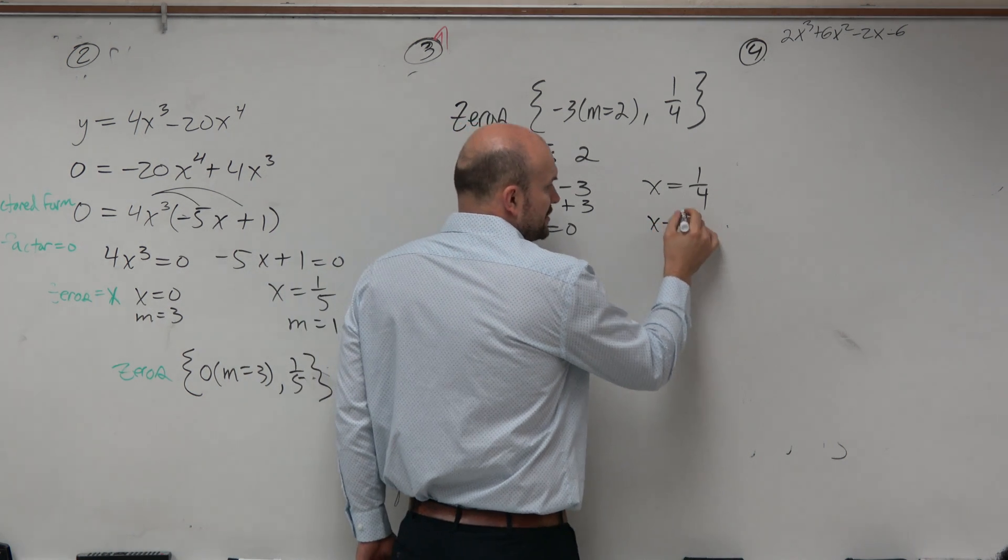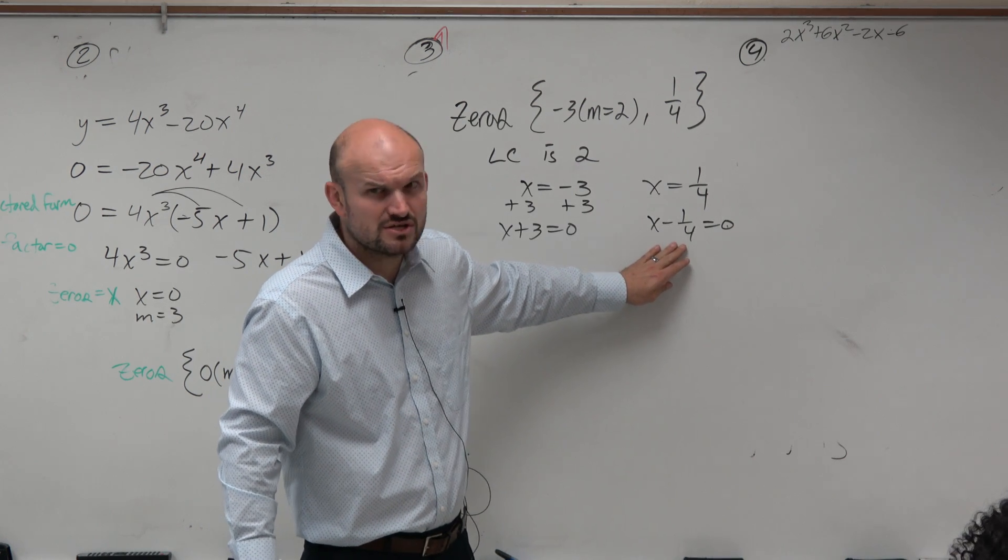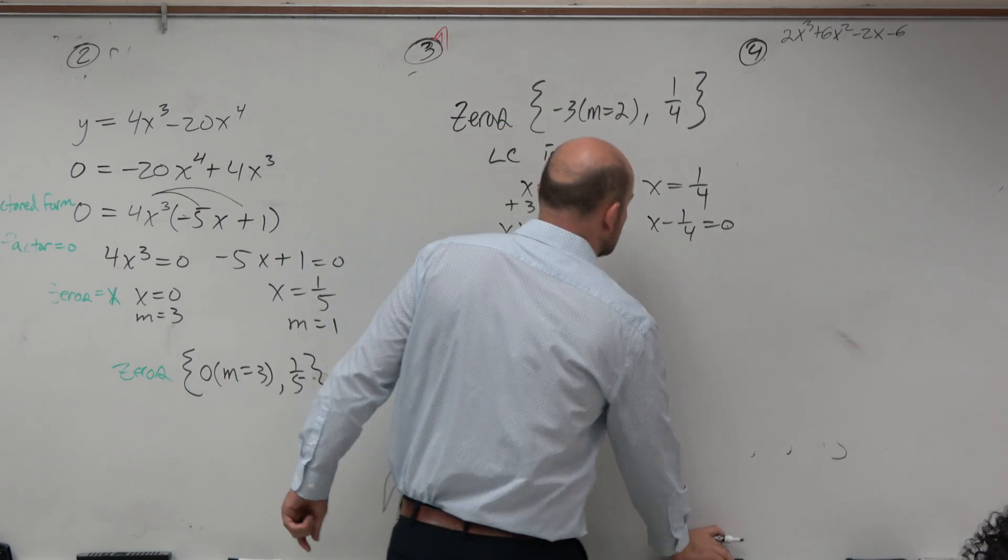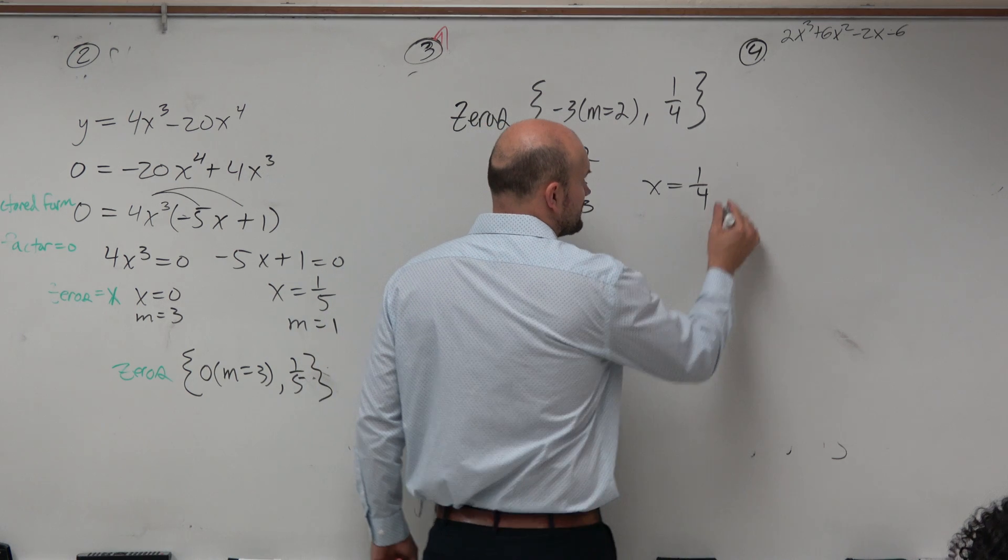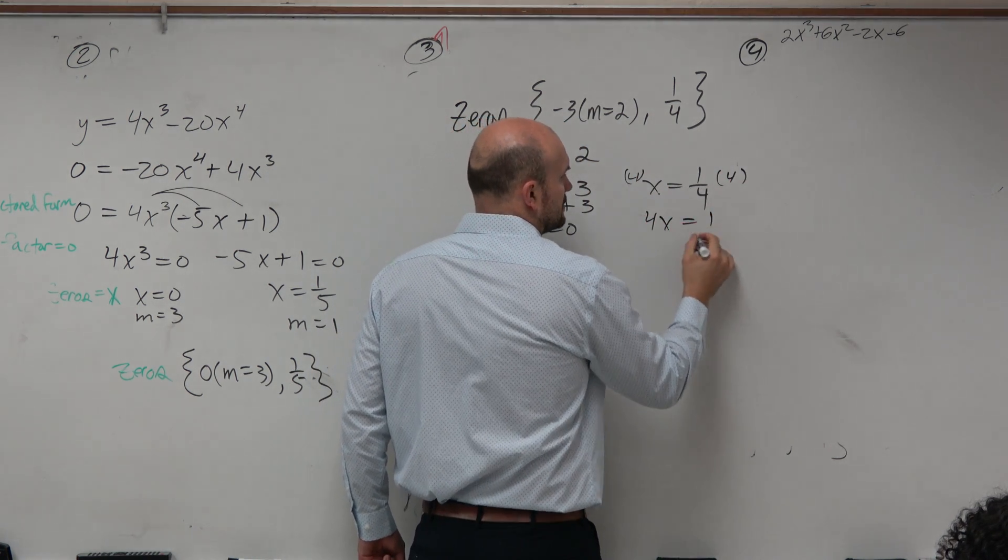Now the one thing you don't want to do is subtract a fraction on both sides. Because does anybody really want to multiply with fractions? No. So the best thing to do here would just be use inverse operations. Multiply by 4. Subtract 1.